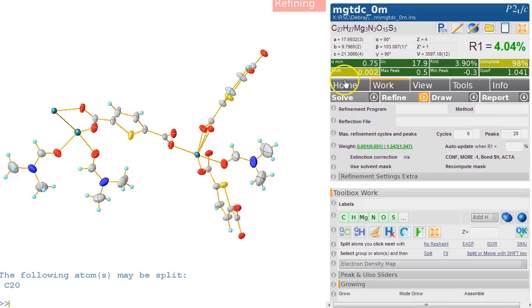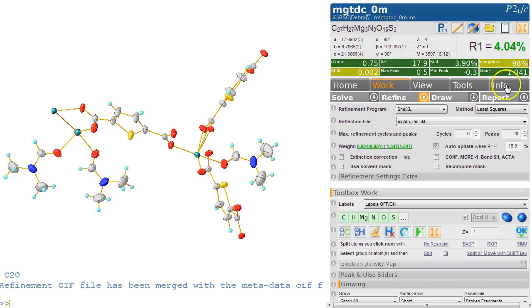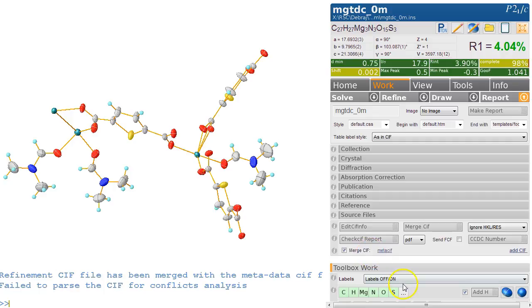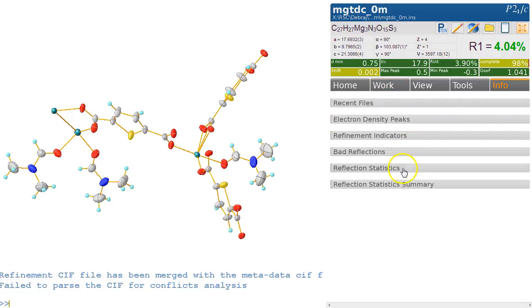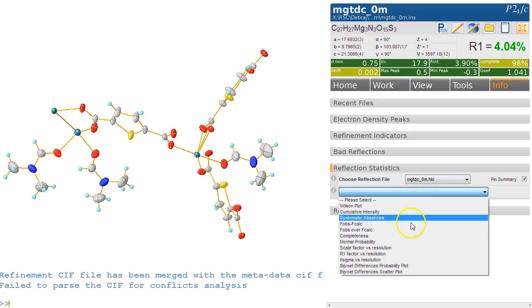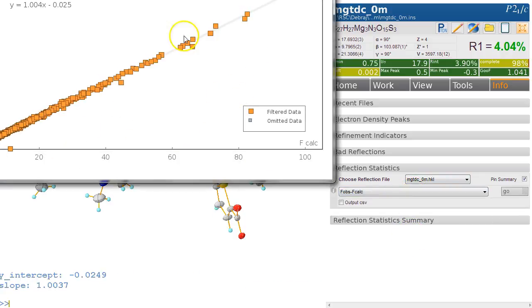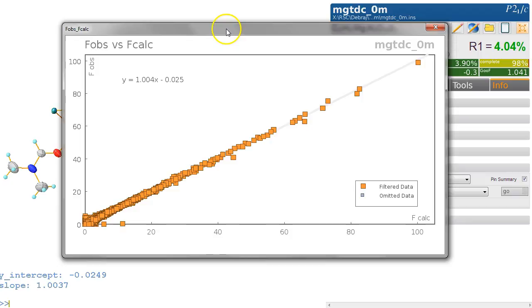It was just this one that didn't settle. Okay, that looks pretty good. Everything's green, there's no more shift. It's a high-resolution dataset. Good to see. It looks fine. We could have a quick look at the statistics we've got here. We click on Info and Reflection Statistics. The thing always to check is the F-obs vs F-calc plot and see whether there's anything really bad here.